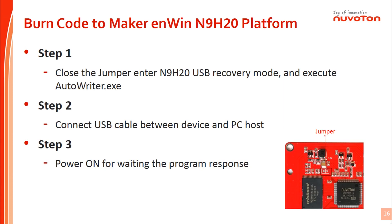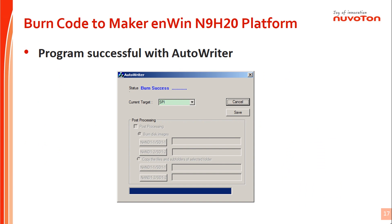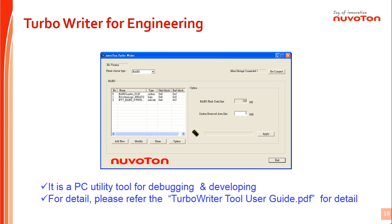Let's start the introduction of programming the main code to the HMI N9H20 demo board. Please follow the steps. Step 1: Close the jumper and enter N9H20 USB recovery mode, then execute AutoWriter.exe. Step 2: Connect the HMI N9H20 USB connector to PC. Step 3: Turn on the HMI N9H20 demo board and check the AutoWriter status — it will auto-program the code to flash. After code programming is finished, you will get the successful message from the AutoWriter tool. Another option is to use the TurboWriter tool, which can also program code to flash. TurboWriter is an engineering tool supporting many functions for engineer debugging and development, such as flash start block and end block settings. Please refer to the TurboWriter user guide for more details.